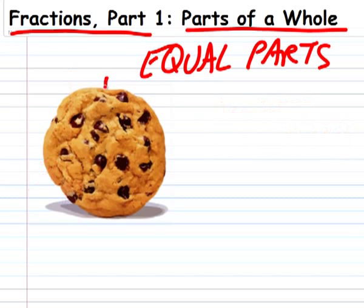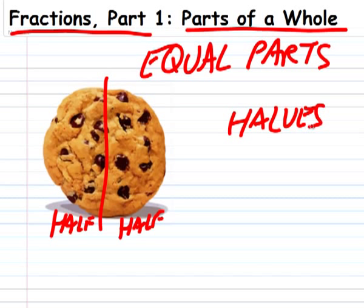But if I break my cookie right down the middle, then the parts are equal. You can have half and I can have half. That's halves. Easy, right?